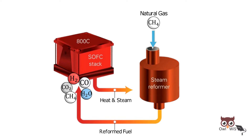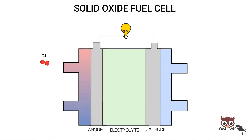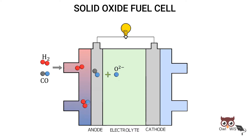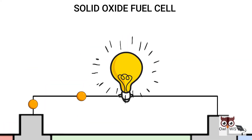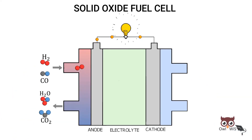Fuel — usually hydrogen and carbon monoxide — enters at the anode, where it reacts with oxide ions from the electrolyte. Hydrogen produces water, thereby releasing electrons, and carbon monoxide produces carbon dioxide, thereby releasing electrons. Both products are taken out, and the flow of electrons in the external circuit produces electric current.